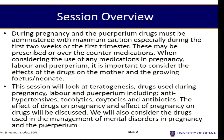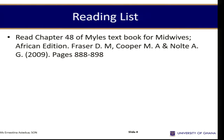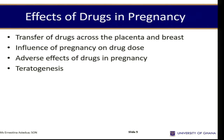Teratogens are not only drugs but also radiation and other agents. By the end of this session, you should be able to explain the pharmacotherapeutic basis of drugs recommended in abnormal pregnancy, labor, and puerperium; describe how pregnancy can influence the effects of drugs; and effectively manage the side effects of drugs — for example, magnesium sulfate.